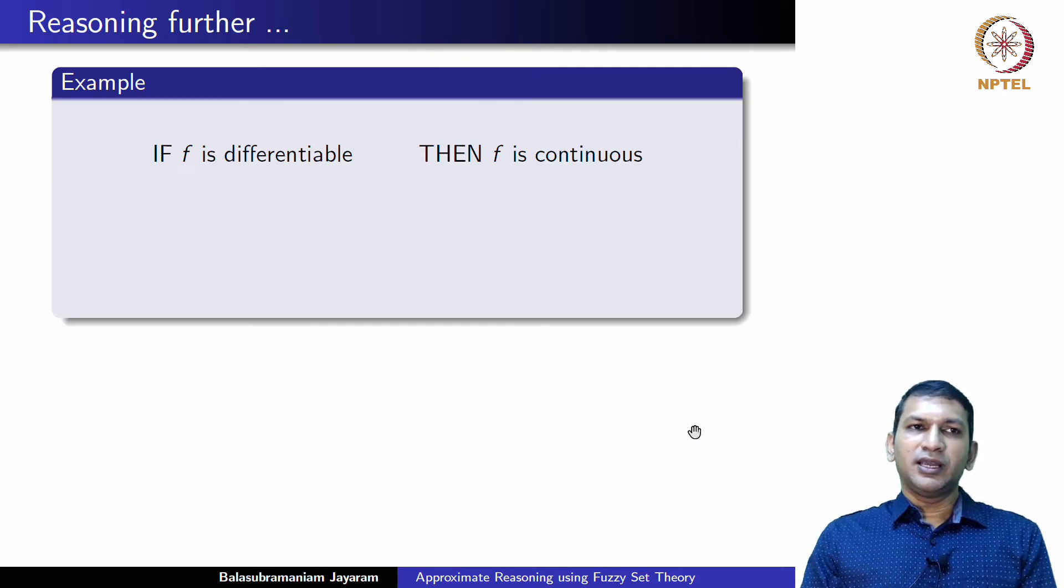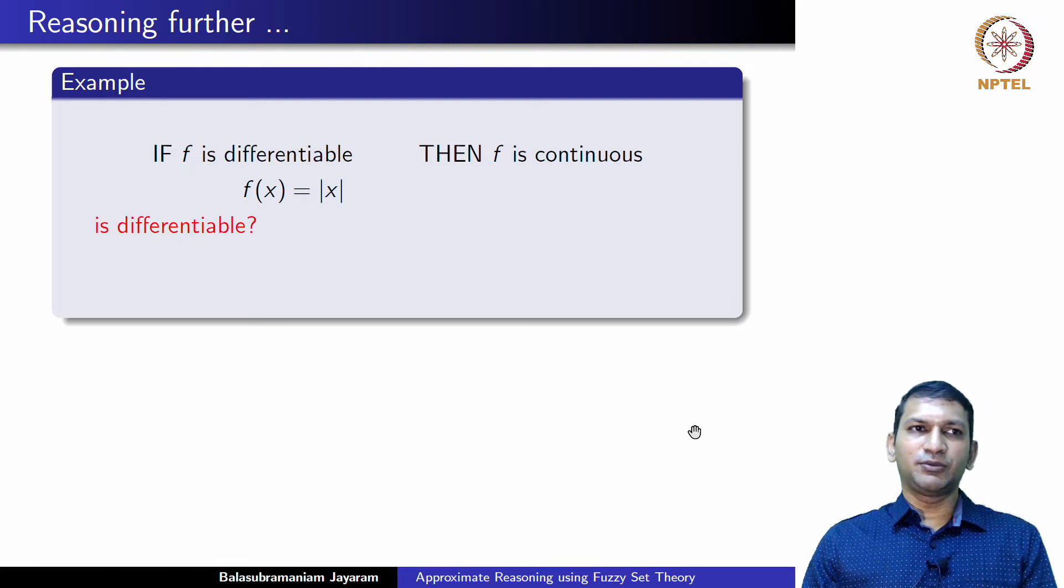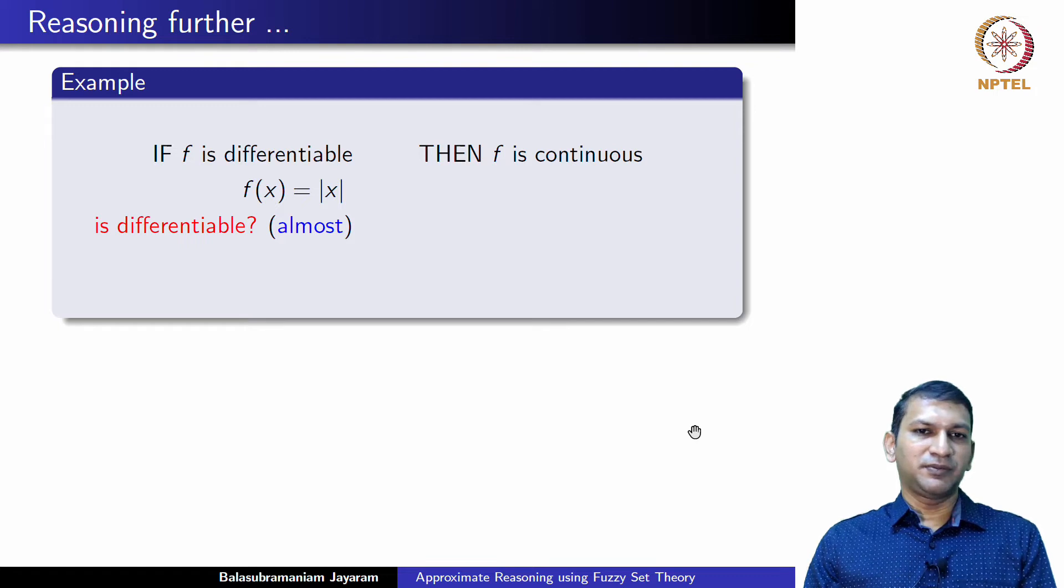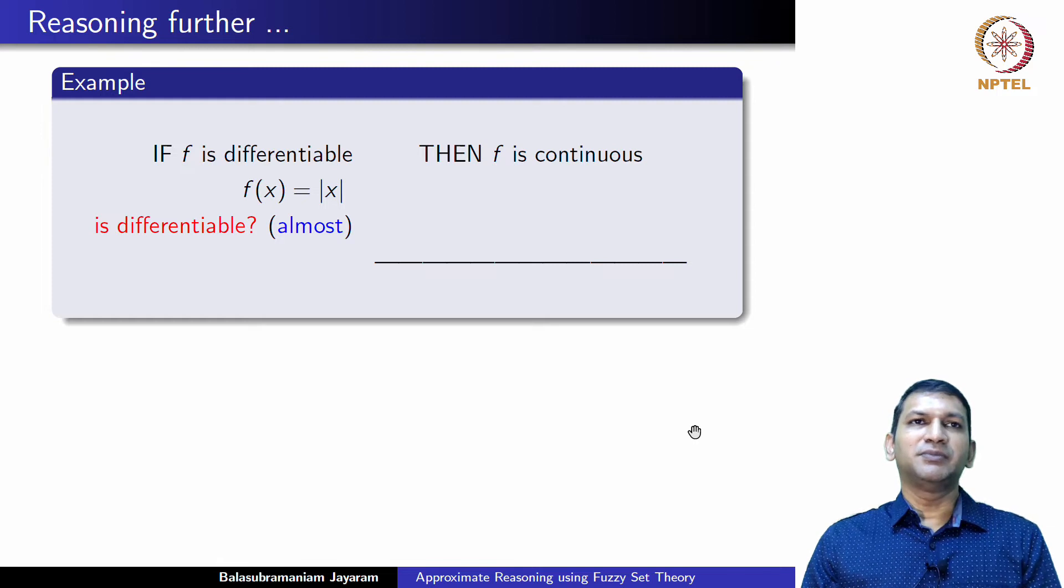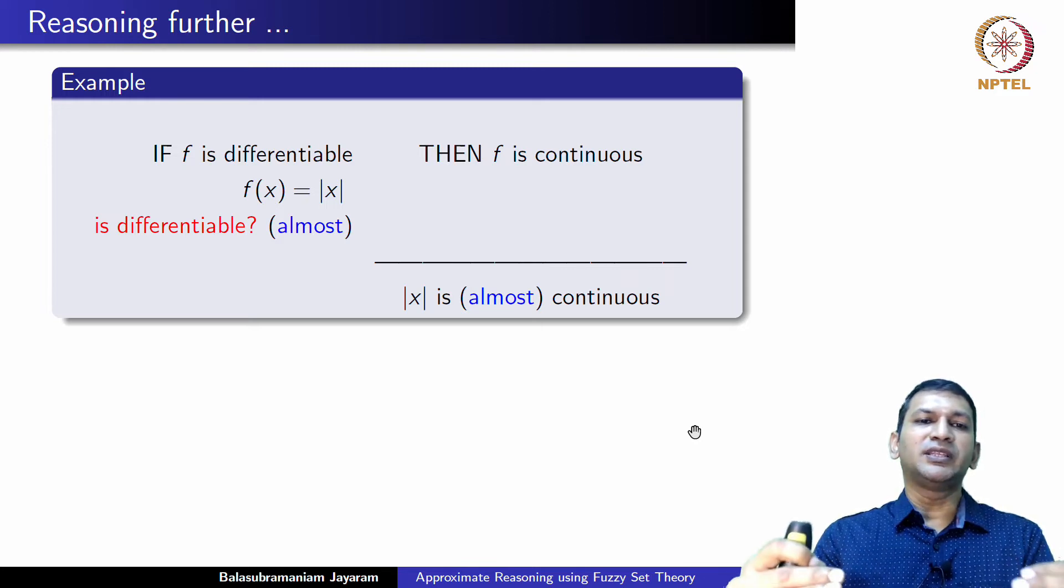Allow me to expand this reasoning a little further. Let us have the same piece of knowledge. But now, let us pick up the function |x|. If you ask yourself, is this function differentiable on its entire domain which is that of the real line? Well, you might say almost. Of course, there is a term in measure theory for this. But let us only for the present use a common usage word. You might say it is almost differentiable. Then given this piece of knowledge and this input, this fact, classical two-valued modus ponens inference scheme does not allow us to reason for that. On the other hand, what we would like perhaps is something like |x| is almost continuous. Of course, we do know |x| is continuous but that is not reasoning with this piece of knowledge.